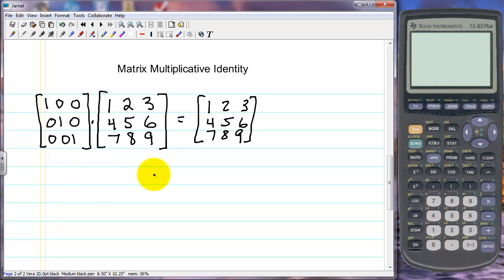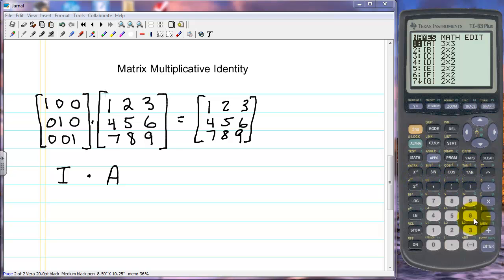Now I've entered these matrices into the graphing calculator, so I've put this in as matrix I and I've put this in as matrix A. So let's bring up the calculator here and do that multiplication. So second matrix, I want matrix I which is number 9, and I want to times that by matrix A. And I had previously entered matrix A as being that matrix and we get back the same matrix.